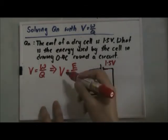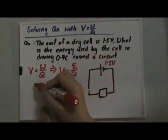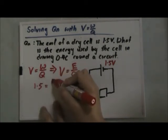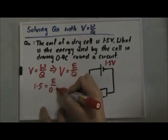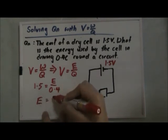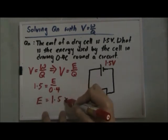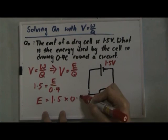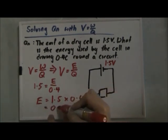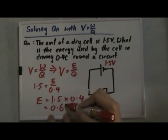We know that the voltage, which is the EMF, is 1.5V. So 1.5V equals the energy we require over 0.4C charge. Therefore, energy equals 1.5 multiplied by 0.4, which gives us 0.6 joules.